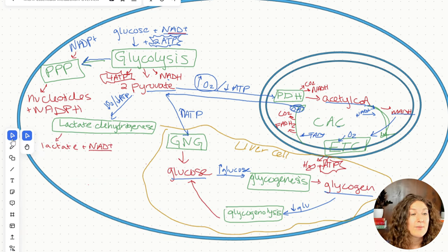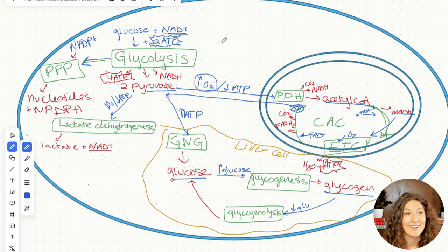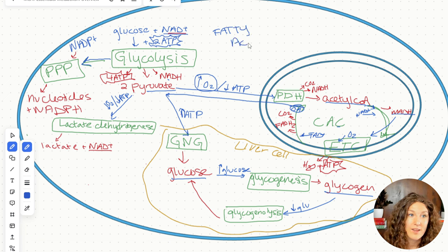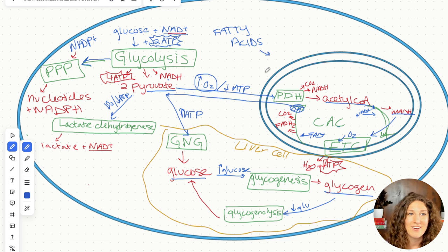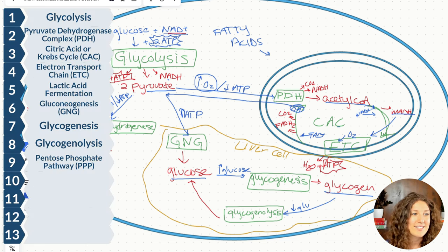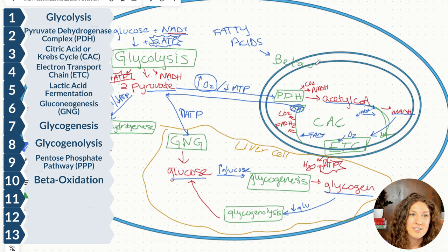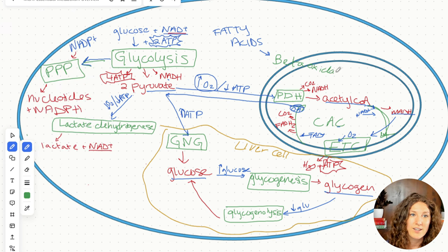Let's say we don't have enough glucose and we need to break down fats for energy. We're going to start with fatty acids as our precursors. We need to have oxygen because the process of breaking down fatty acids happens partially in and partially outside of the mitochondria. That process — that pathway — is called beta-oxidation. We're going to draw it into the mitochondria.